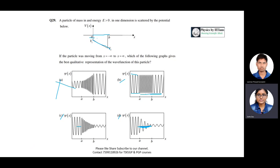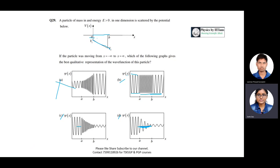One option shows no change in amplitude through the potential region — but that is incorrect because at each boundary some wave is reflected and some transmitted, so the amplitude must decrease progressively. Therefore, option C is the correct answer, showing decreasing amplitude and higher frequency in the potential region. This question was asked in CSIR-NET around 2019.